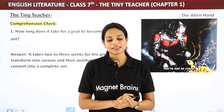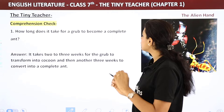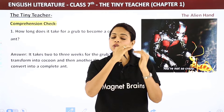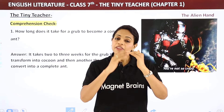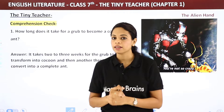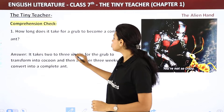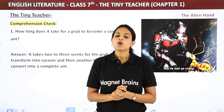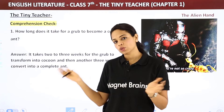Q&A: How long does it take for a grub to become a complete ant? It takes two or three weeks for the grub stage (when workers feed, air, and exercise them), then the grub becomes a cocoon for another three weeks. After those three weeks, a complete ant appears. So the total is about two to three weeks as a grub, then three more weeks as a cocoon.